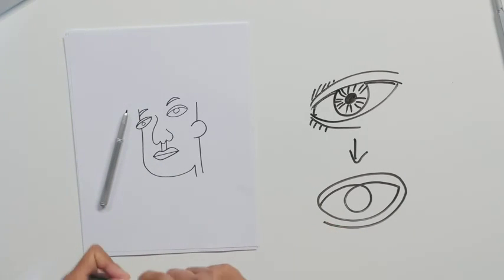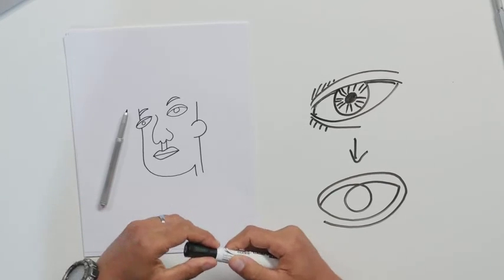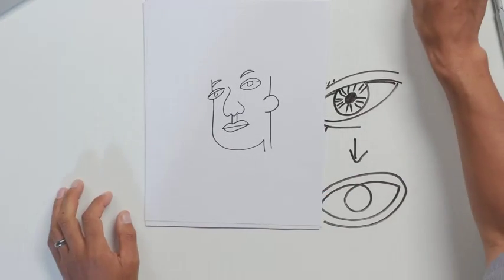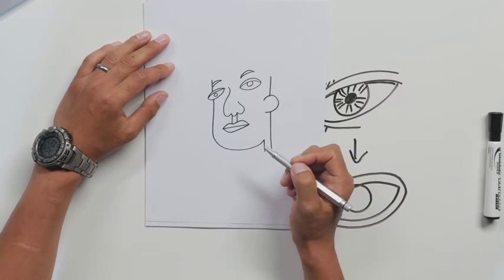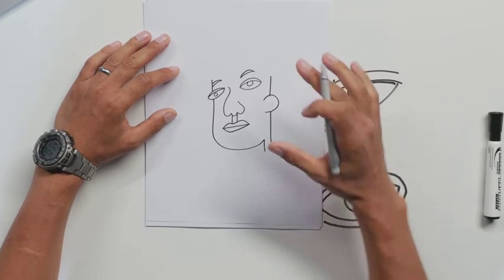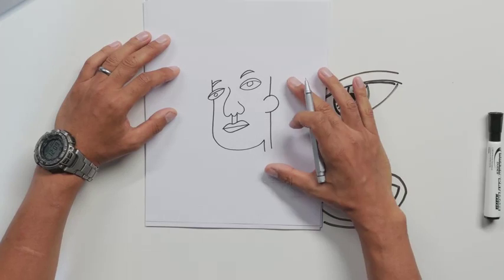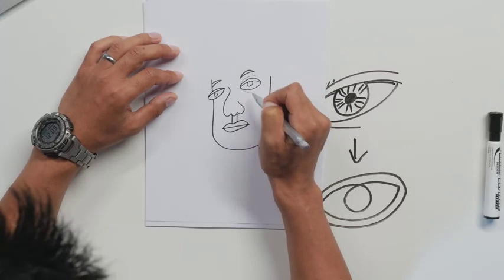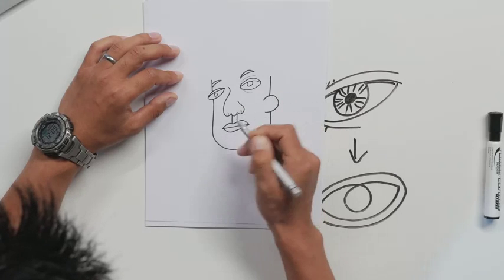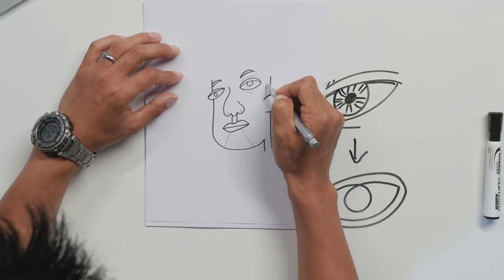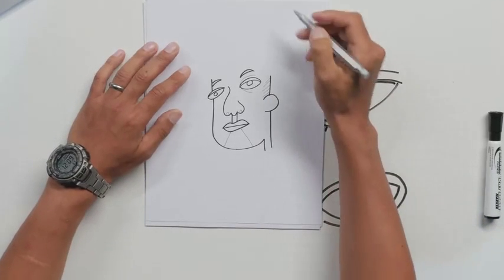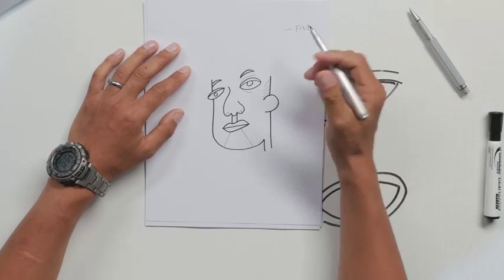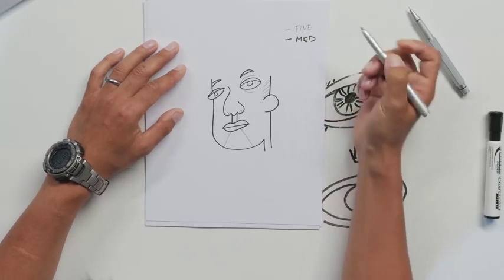Next criteria is use three different line widths: fine, medium, and bold line widths. So here is my starting point of my drawing. And maybe I can switch my markers to add variation in lines. So let's say this is a medium point line width. I'm going to add fine line variation. So now I have this fine line width and this medium line width.